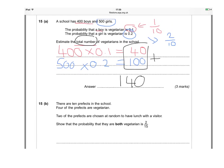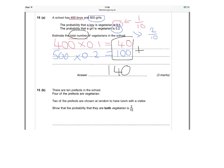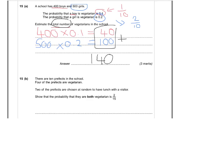The second question's a little bit harder. It says there are 10 prefects in the school, 4 of the prefects are vegetarian, so that's 4 out of the 10 are vegetarians. And 2 of the prefects are chosen at random to have lunch with a visitor, to show that the probability that they are both vegetarian is 2 fifteenths.